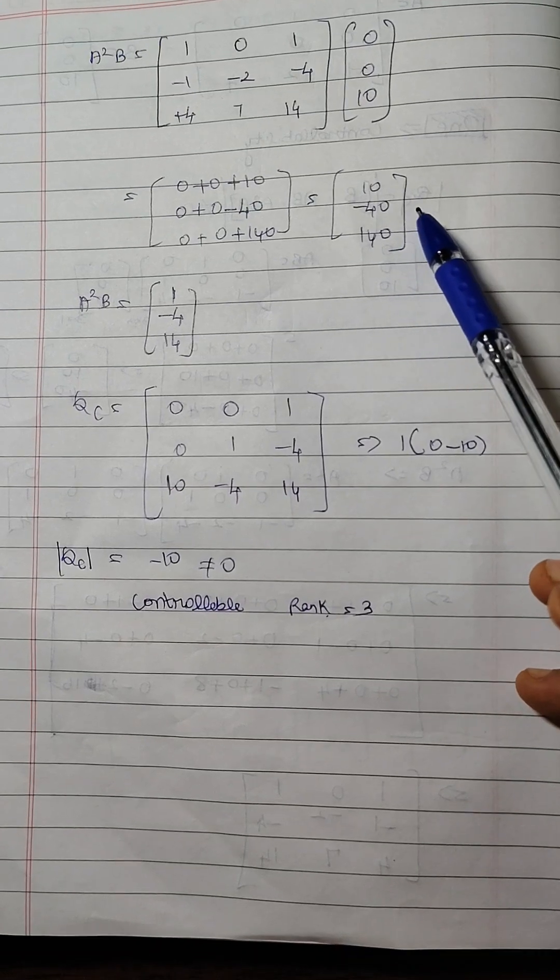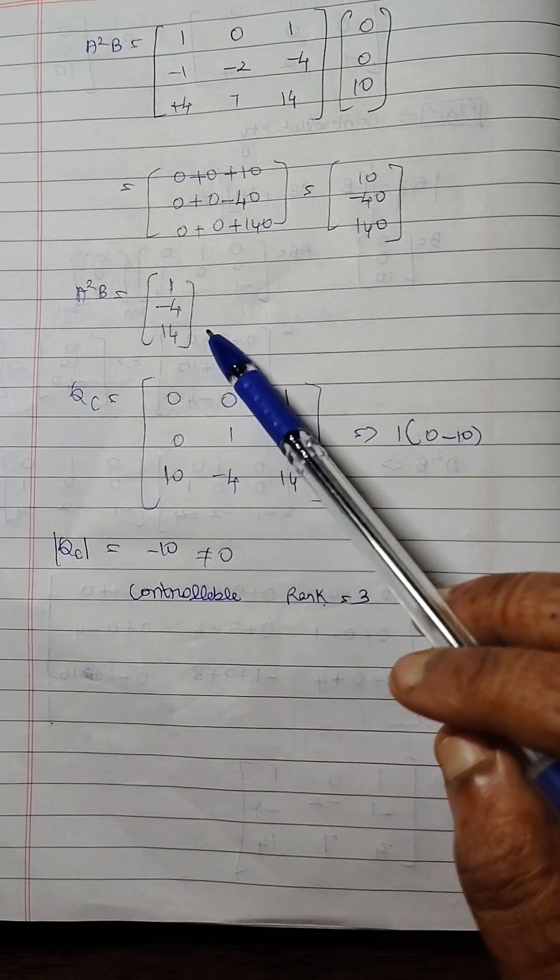We can reduce this matrix. When we are dividing it by 10 we get the value as 1, minus 4 and 14.